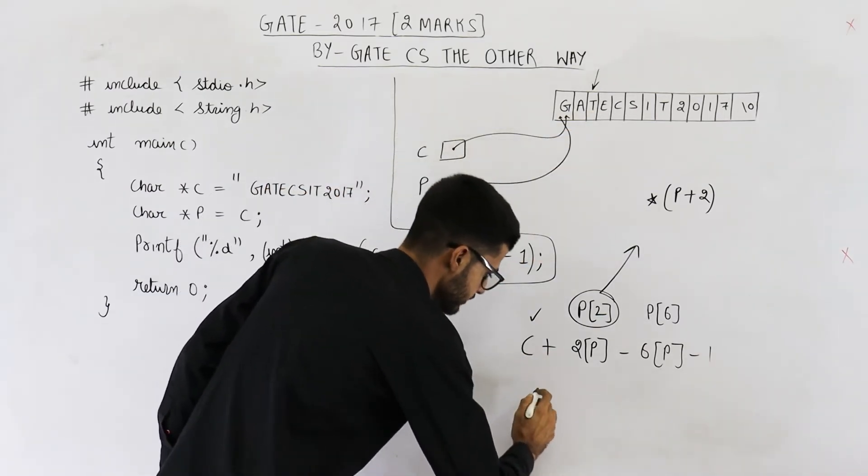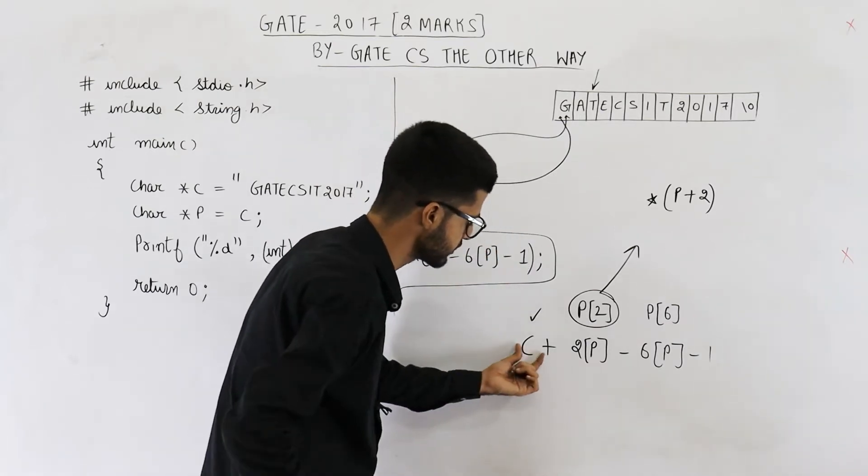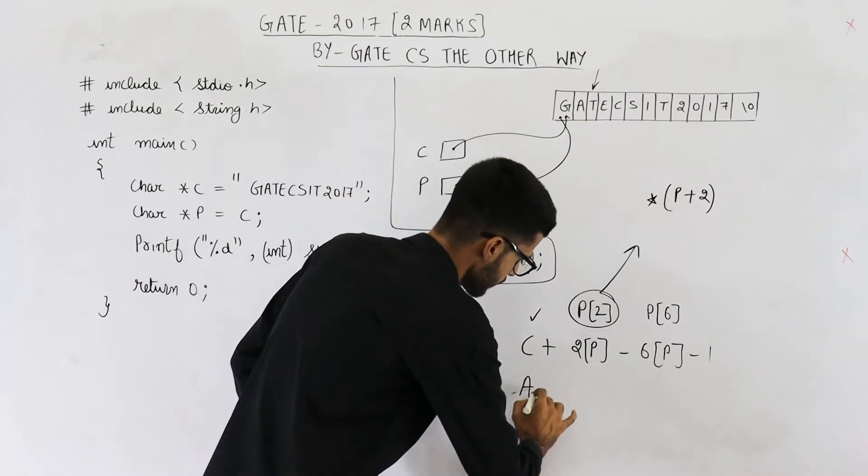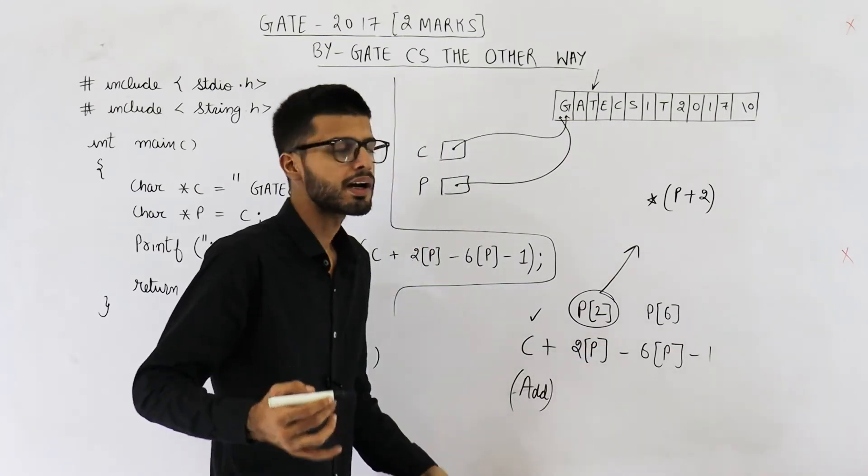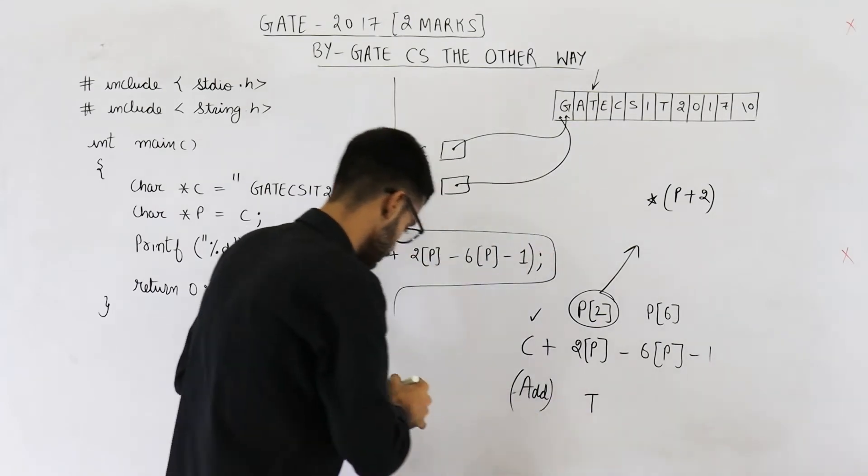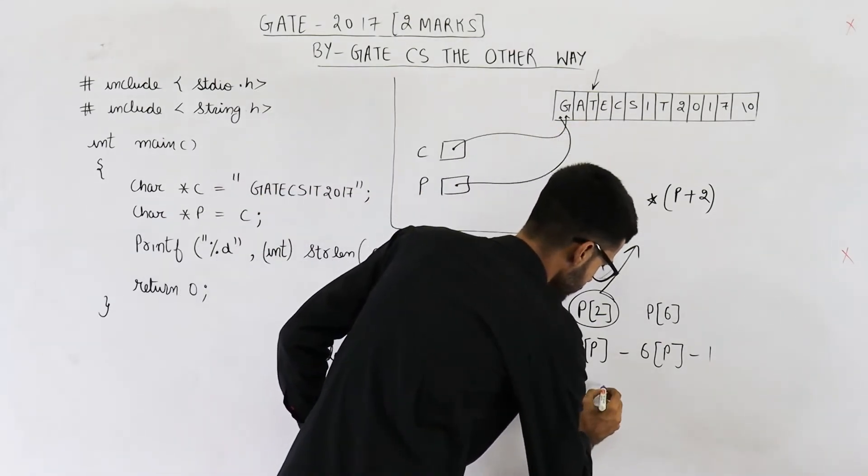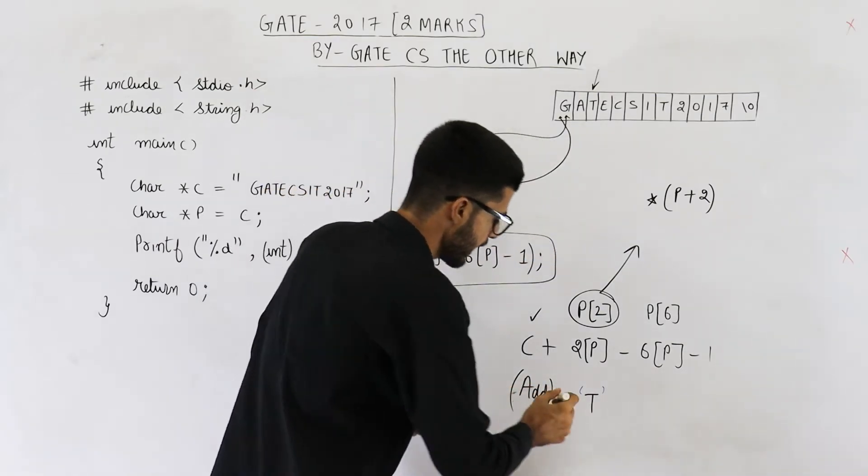What is p? p points here. What will be p plus 2? This is p plus 1. This is p plus 2. So this will be p plus 2. See p is address. p plus 2 will also be address. That is this address. Now this star means take the value saved at that address. So value saved at this address is t, the character t. So this is some address.